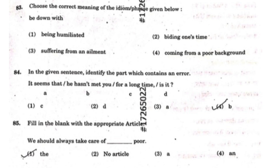Question 83: Choose the correct meaning of the idiom 'be down with.' The correct answer is the third option: 'suffering from ailment.' You might have heard — 'I'm down with fever.' Basically, when you are not energetic and not in good health, you use this idiom. So for question 83, the third option should be correct.